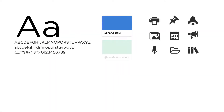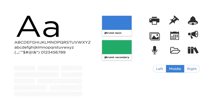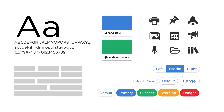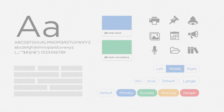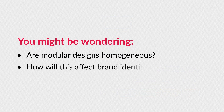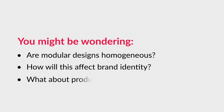Modular UI design is about designing a system. If UI systems are typically comprised of the same type of parts — like buttons, typefaces, icons, grids, etc. — then you might be wondering: are modular designs all going to look the same? How will this affect brand identity? How can the UI of a product be unique when using modular design?